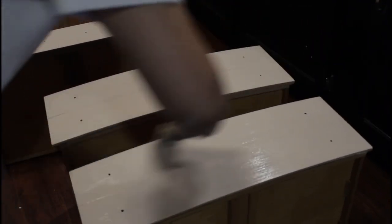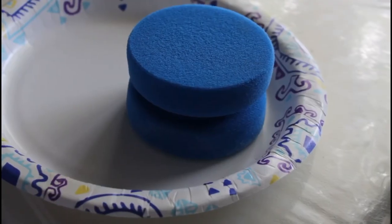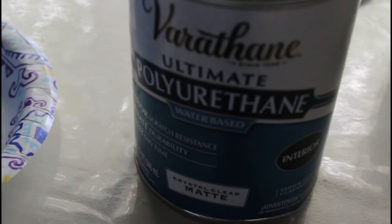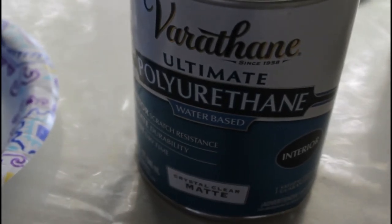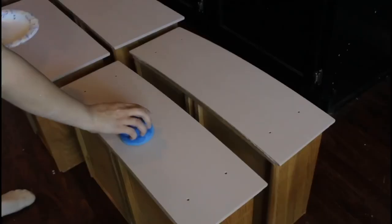When it is my last coat of paint, which in this case the second one was my last coat, I don't go and sand it again. I leave it how it is and then I apply my polyurethane, water-based in crystal clear matte, and I do that with a sponge.